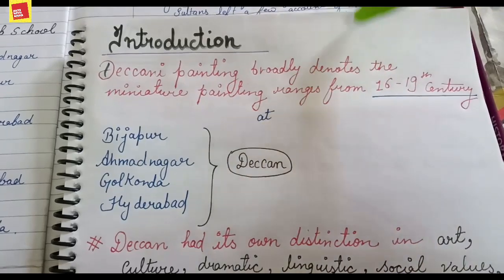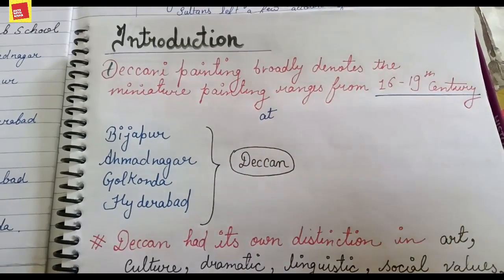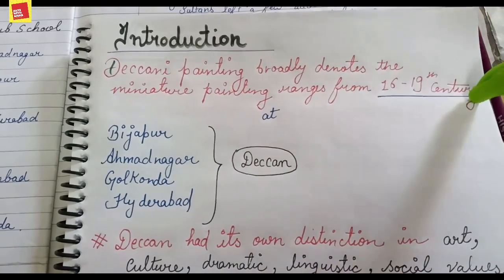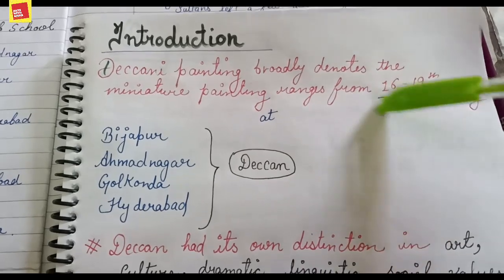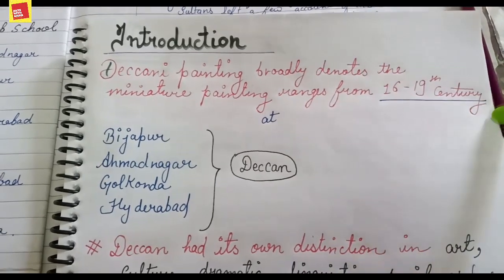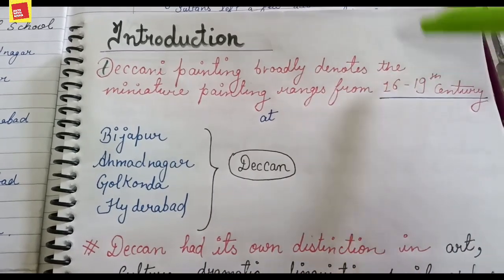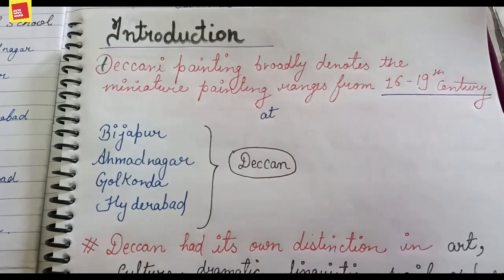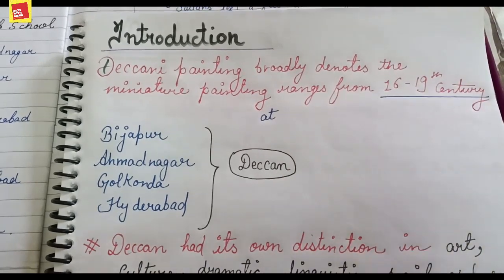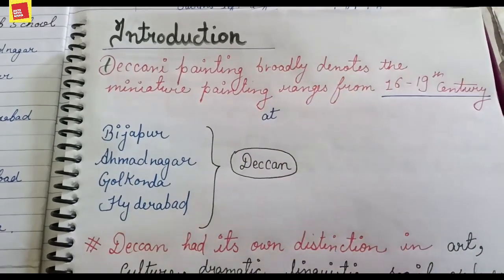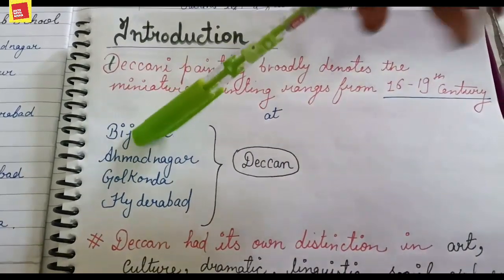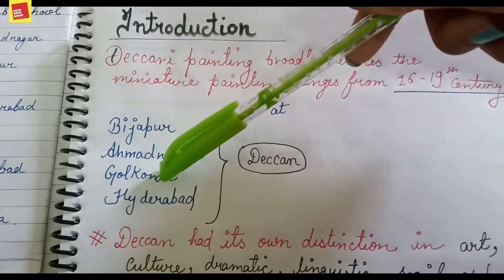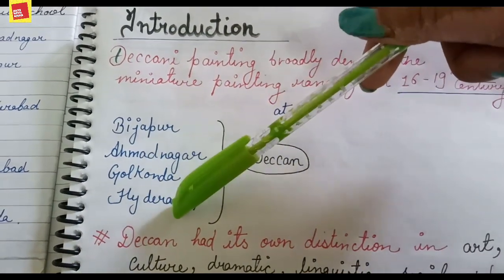Deccan painting broadly denotes miniature painting ranging from the 16th to the 19th century. All the paintings from this region are classified under Deccan. The regions include Bijapur, Ahmednagar, Golconda, and Hyderabad — four regions which are all known as Deccan. Deccan means South.